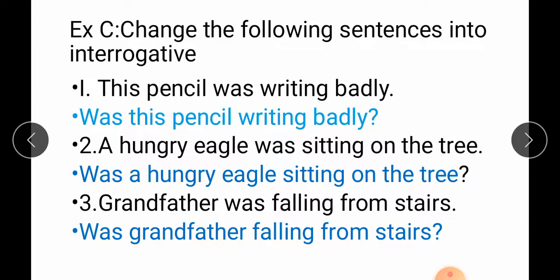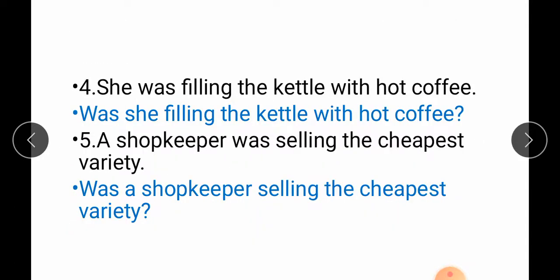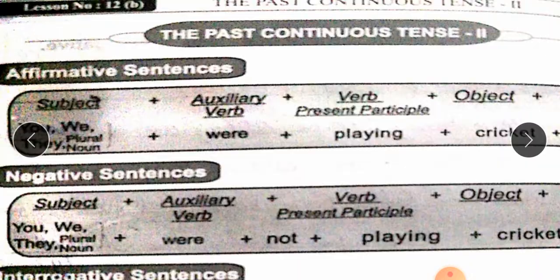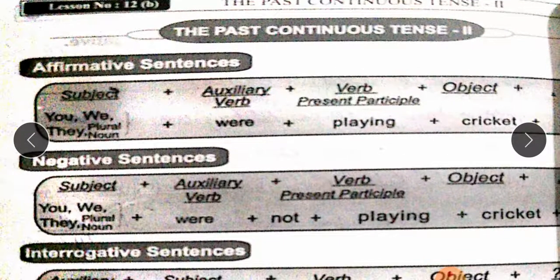Exercise C — Change the following sentences into interrogative. The auxiliary will come at the beginning and a question mark at the end: This pencil was writing badly → Was this pencil writing badly? A hungry eagle was sitting on the tree → Was a hungry eagle sitting on the tree? Grandfather was falling from stairs → Was grandfather falling from stairs? She was filling the kettle with hot coffee → Was she filling the kettle with hot coffee? A shopkeeper was selling the cheapest variety → Was a shopkeeper selling the cheapest variety?